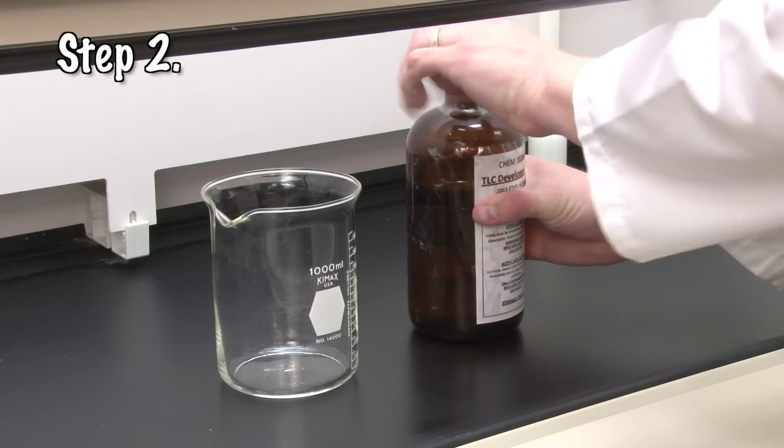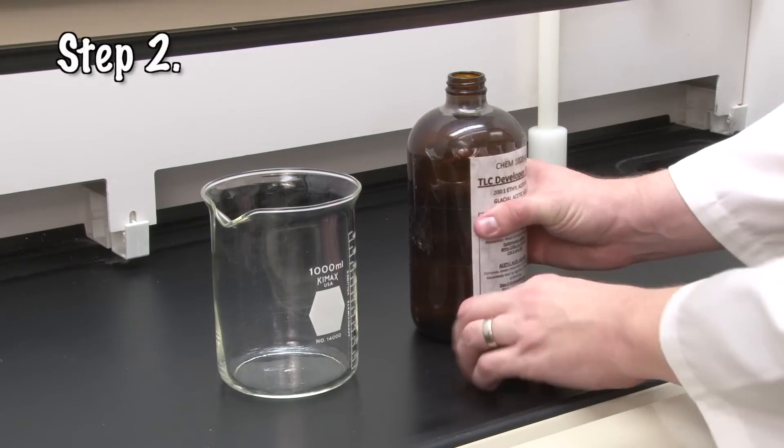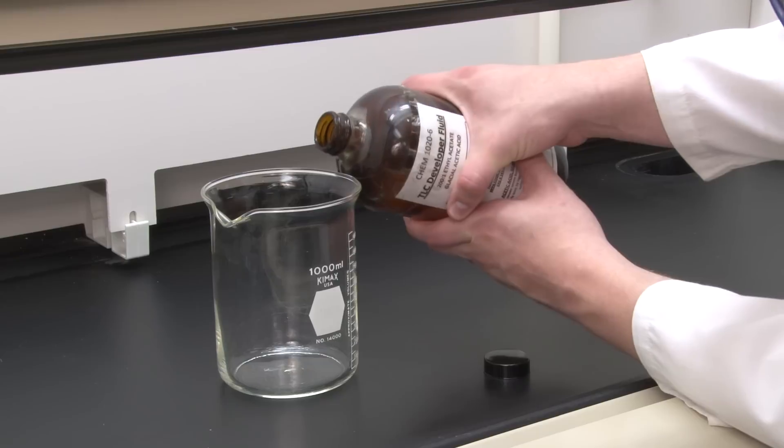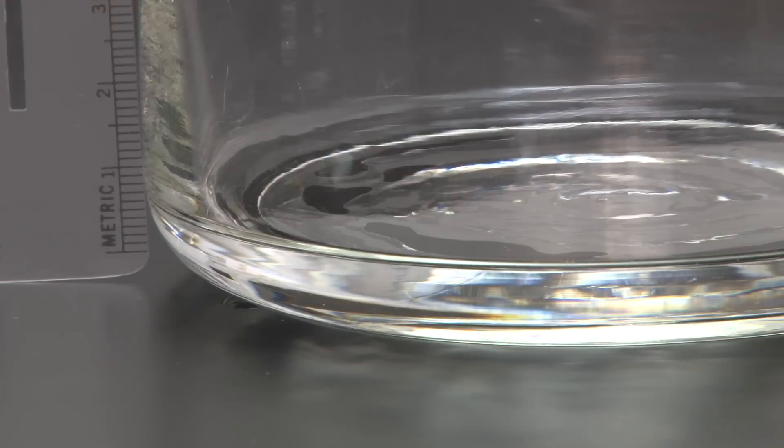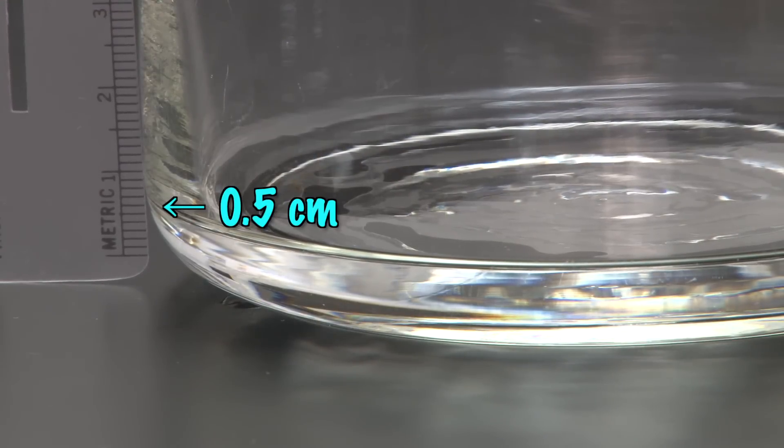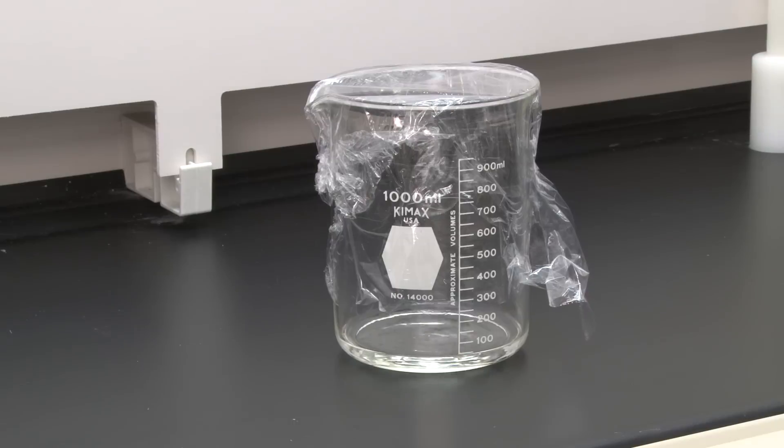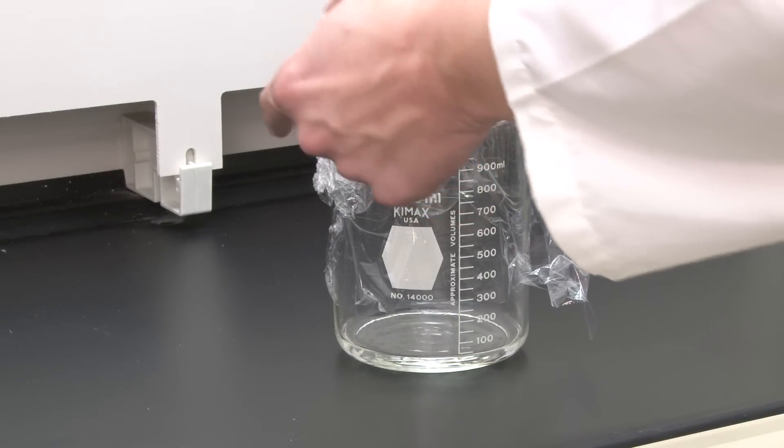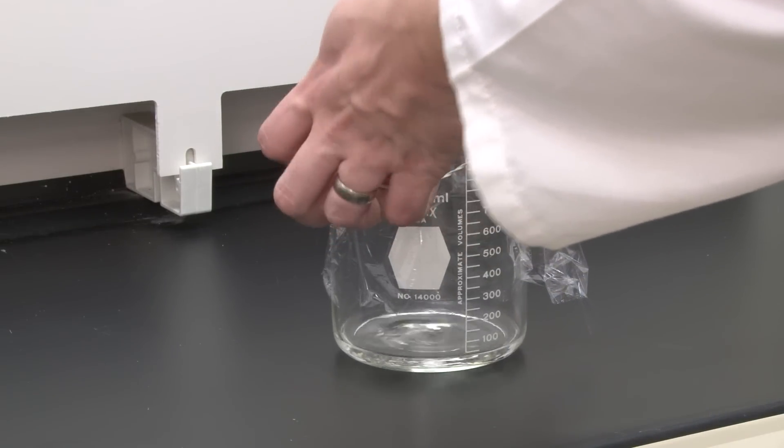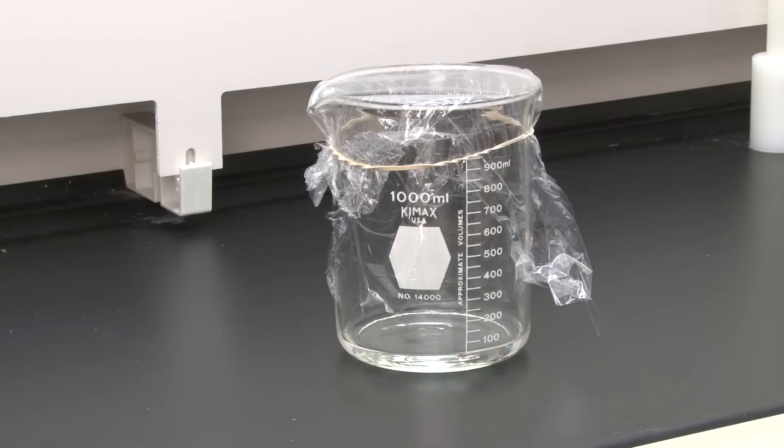First, you'll prepare a developing chamber under the hood by pouring a pre-made developing solvent mixture into a 1-liter beaker to a depth of about a half a centimeter. Cover the beaker with plastic wrap or a large watch glass. When the container is airtight like this, the solvent vapors will fill the chamber and the developing process later will work much better. Set the chamber aside under the hood for later.